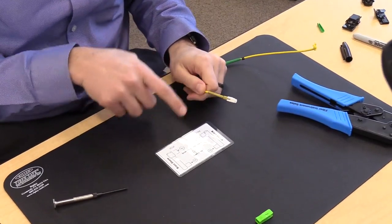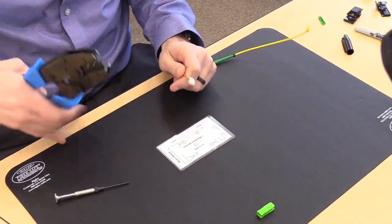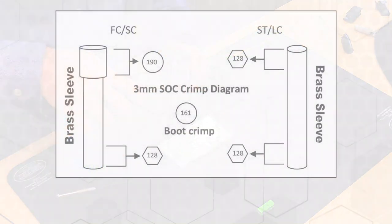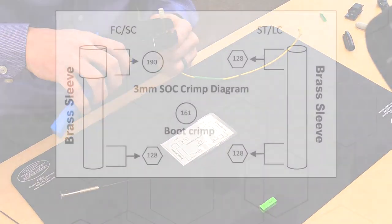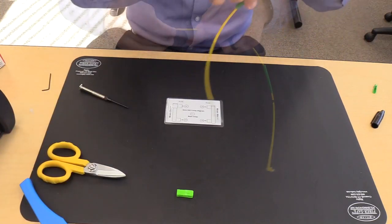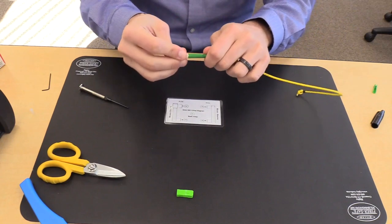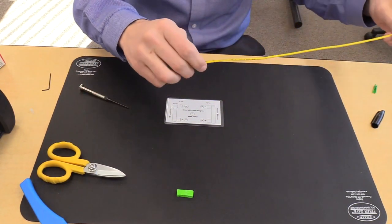On the other side of the strip chart is the crimp ring diagram. Since this termination is a SC connector, crimp the top using the 190 round. Down below, crimp by using the 128 hex. Slide the boot up, then the black crimp ring up to the back of the boot, and crimp it by using the 161 round.